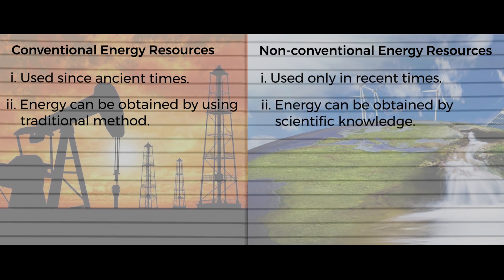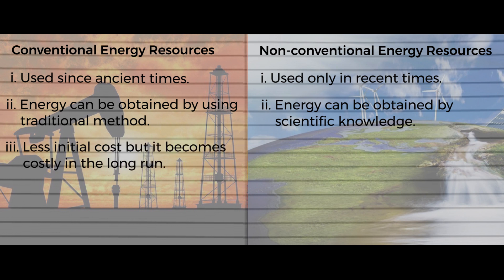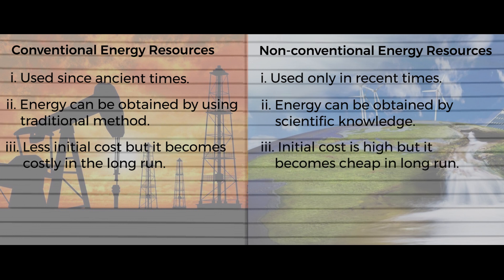Whereas non-conventional energy resources are obtained using scientific knowledge — producing electricity using hydropower plants or water energy is the best example. The initial cost to set up conventional energy resources is very cheap, but becomes expensive in the long run. On the other hand, the initial cost for non-conventional energy resources is very expensive, but it becomes cheaper in the long run.